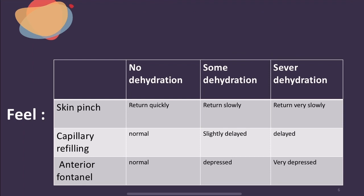Now 'feel': first skin pinch, then capillary refilling, and anterior fontanel in sitting position. For skin pinch — pinch the skin of the abdomen between the thumb and first finger and then release. If the skin returns quickly: no dehydration. If it returns very slowly, more than 2 seconds: severe dehydration. In between: some dehydration. For capillary refilling — put pressure on the nail bed until it turns white, then release immediately. If it refills in less than 1 second: no dehydration. Delayed refill: severe dehydration. In between: some dehydration. For the anterior fontanel in sitting position: depressed or sunken means some dehydration, very depressed means severe dehydration.